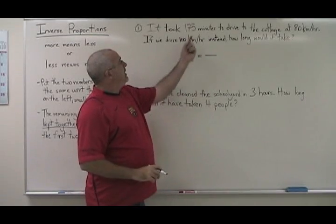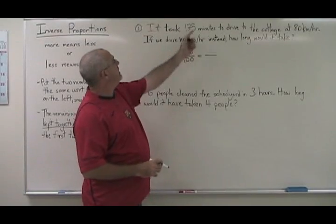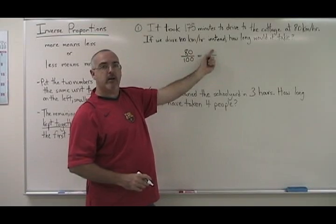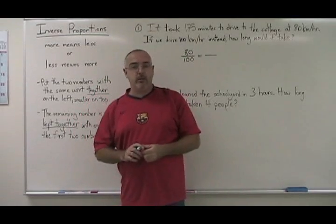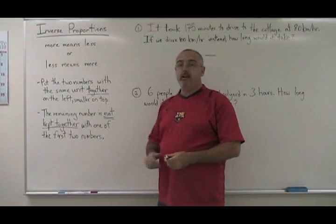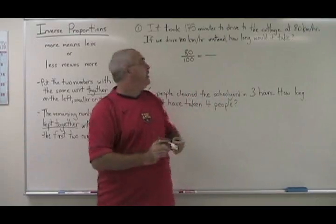The third number is 175 minutes. If it was a direct proportion, we would see 175 goes with 80, so we have to put 175 together with the 80 on the top. But this is where the rule of an inverse proportion is different. The second step, the remaining number is not kept together with one of the first two numbers.